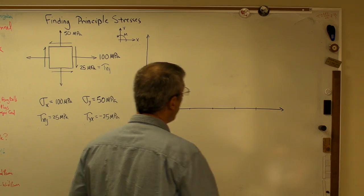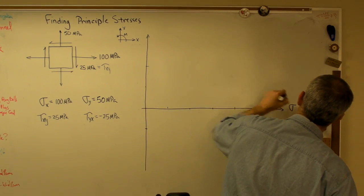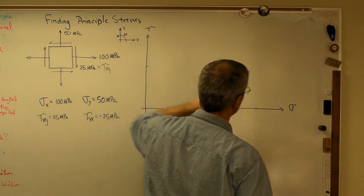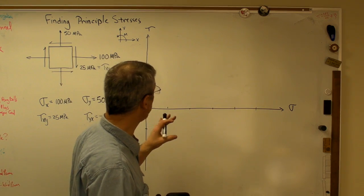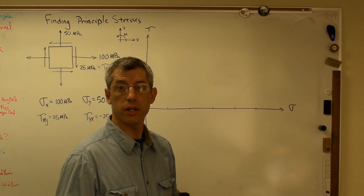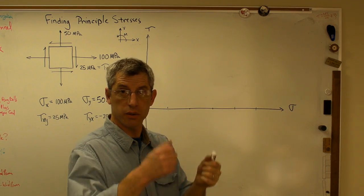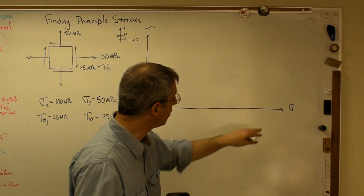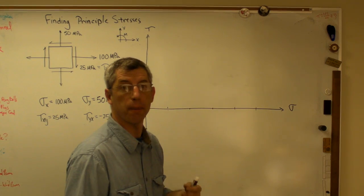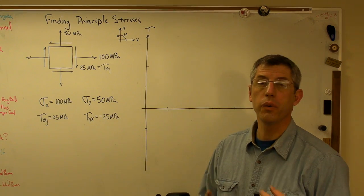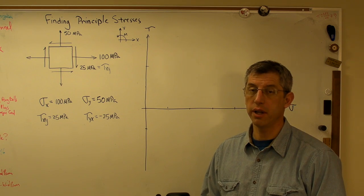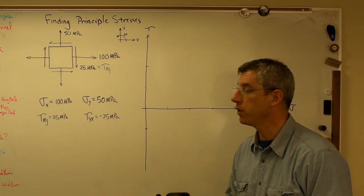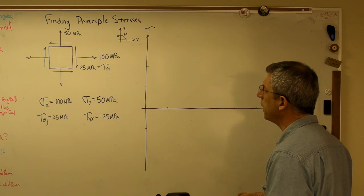Mohr's circle is drawn on stress axes. That is normal stress and shear stress, tau xy. The reason we do this is that Mohr noticed that when he wrote the equations that show how to transform stress with direction, if you plotted them on this axis, you got a circle. If you know radius and the center location of a circle, you know everything there is to know about a circle. That's what we're doing here.